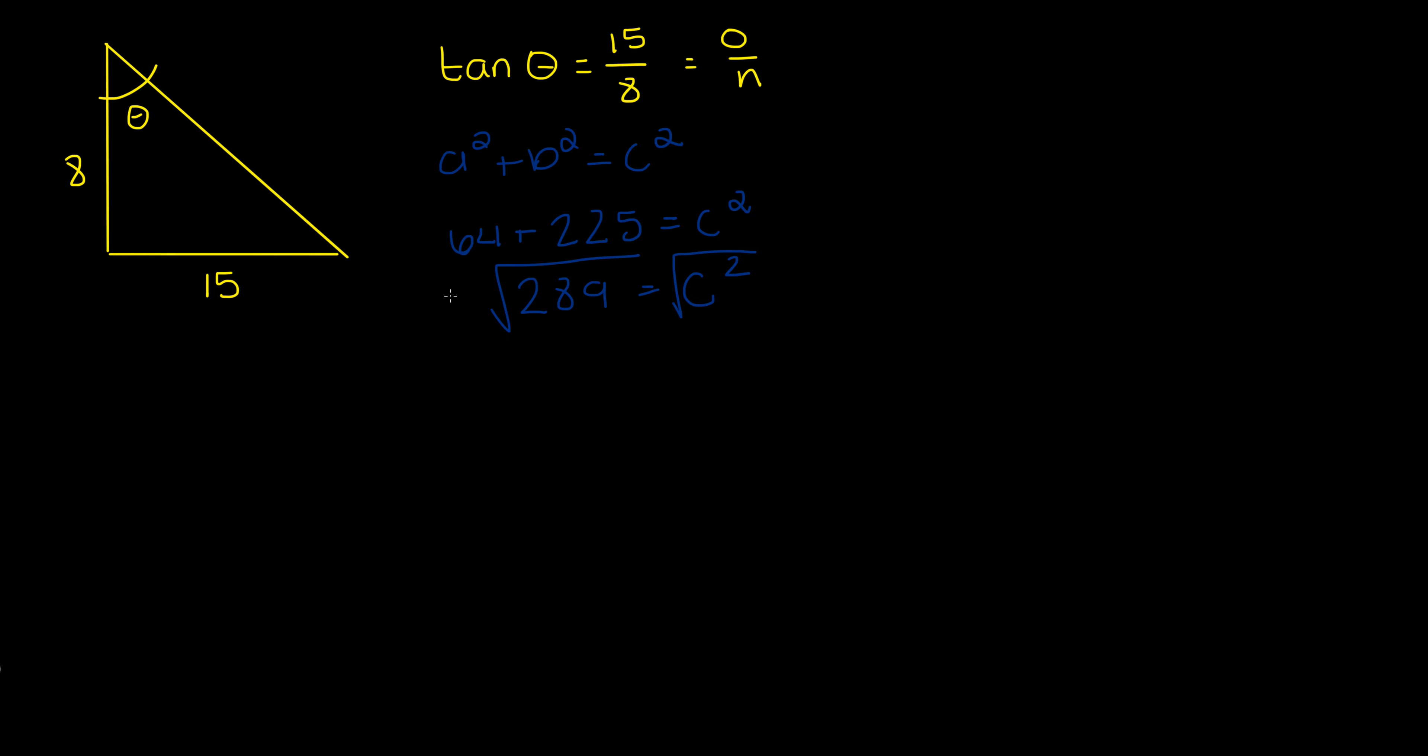Again this is not going to be a plus or minus. We don't need the plus or minus in this case because length can only be positive. So we are going to be looking at the square root of 289 which is 17. So this is an 8-15-17 triangle.